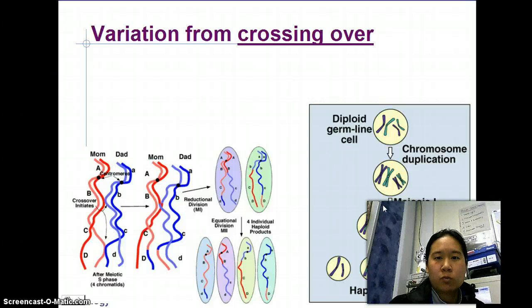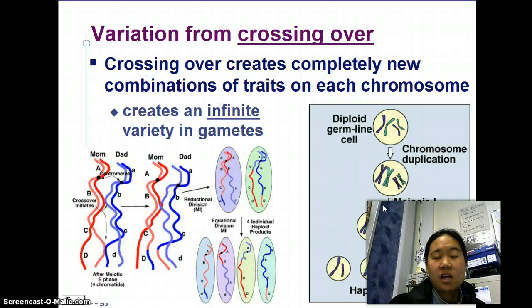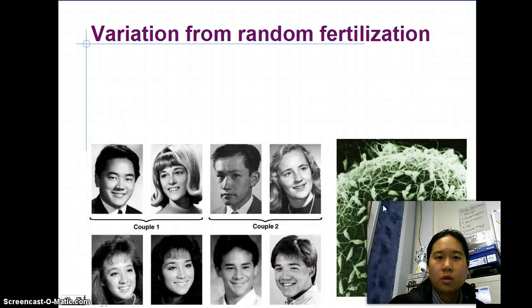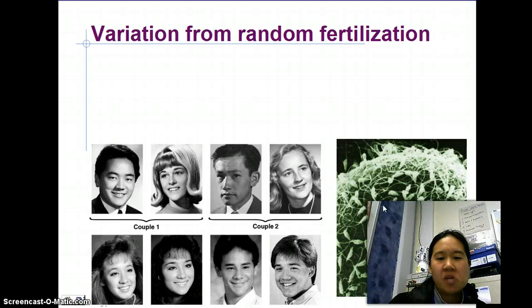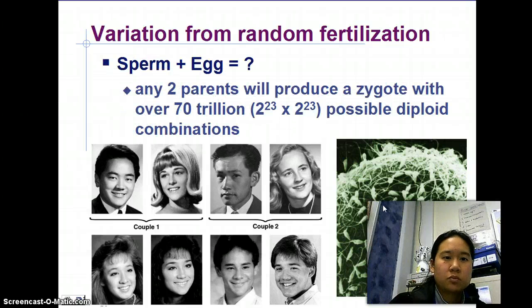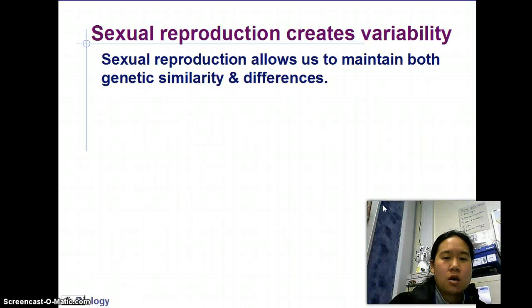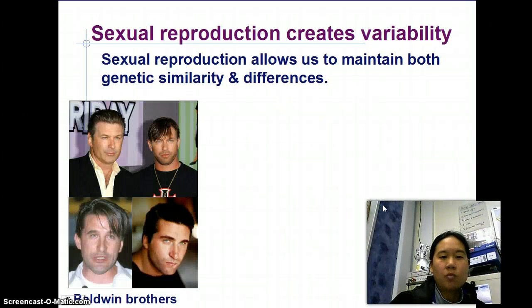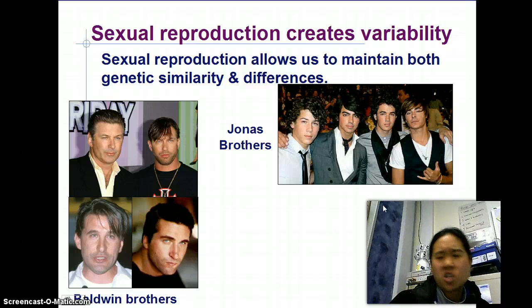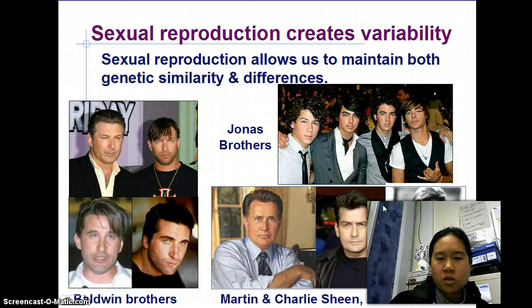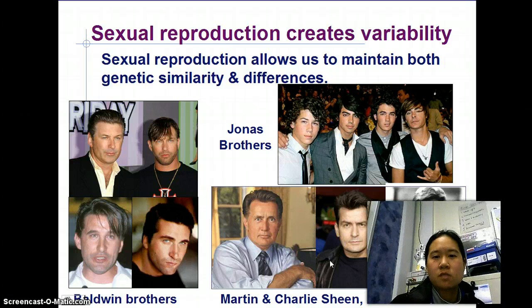Any combination that could happen can happen. Your kids look different from you — brand new combination. You can look at the Baldwin brothers, the Jonas Brothers, the Sheen Brothers — same parents, different siblings. They have some things in common and some things different. You get cells from mom, cells from dad, put it together and you've got you. With every generation, you get new things that weren't there before.